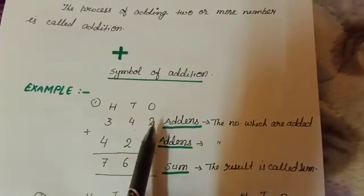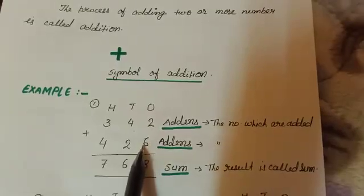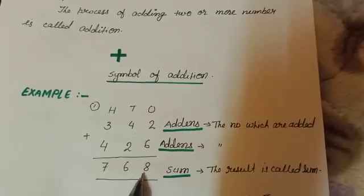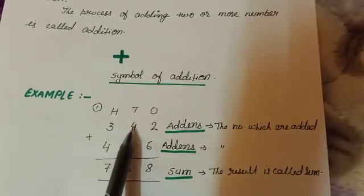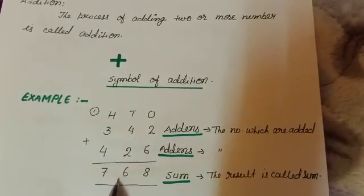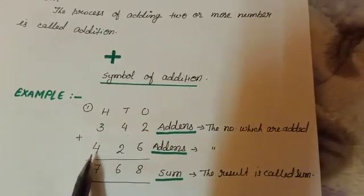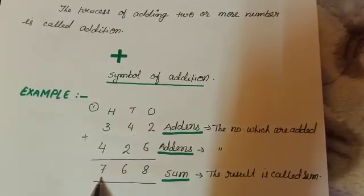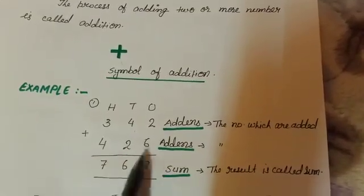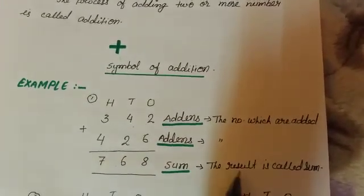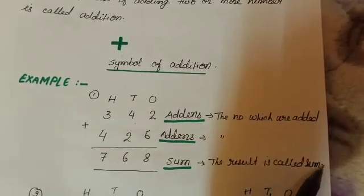See, 2 and 6 is equal to 8. 4 plus 2 is equal to 6. 3 plus 4 is equal to 7. This is called sum. The result is called sum.